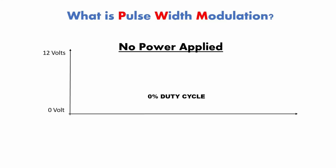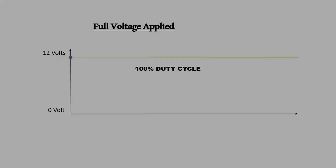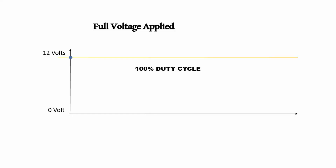First of all, I want you to know that PWM is a digital signal and not an analog one, as we can see. In our first graph, we have on the y-axis 0 to 12 volts, but no voltage is applied to our hypothetical circuit. So no current is flowing and we have no power on it — 0% is our total power output.